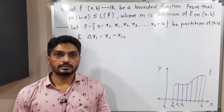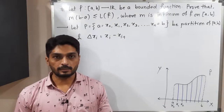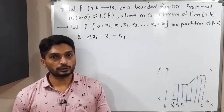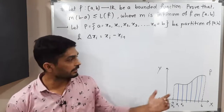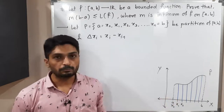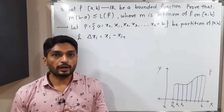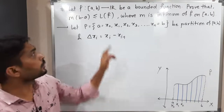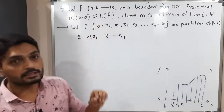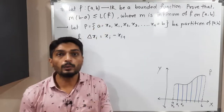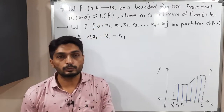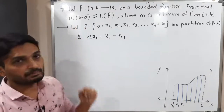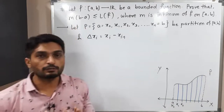Hi everyone, let us discuss this result. We have a bounded function f defined on a closed interval [a, b], and we have to prove this inequality: the lower integral LF is greater than or equal to m times (b minus a).